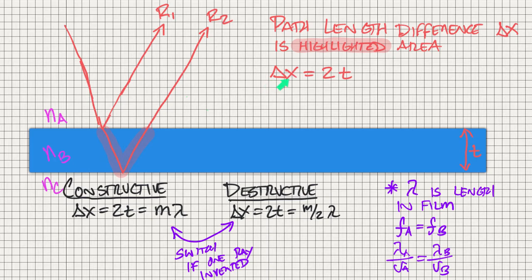What we can say is the path length difference is equal to two times the thickness of my thin film. Now what's going to happen is constructive interference is going to occur if this path length difference is an integer of the wavelength of the light.